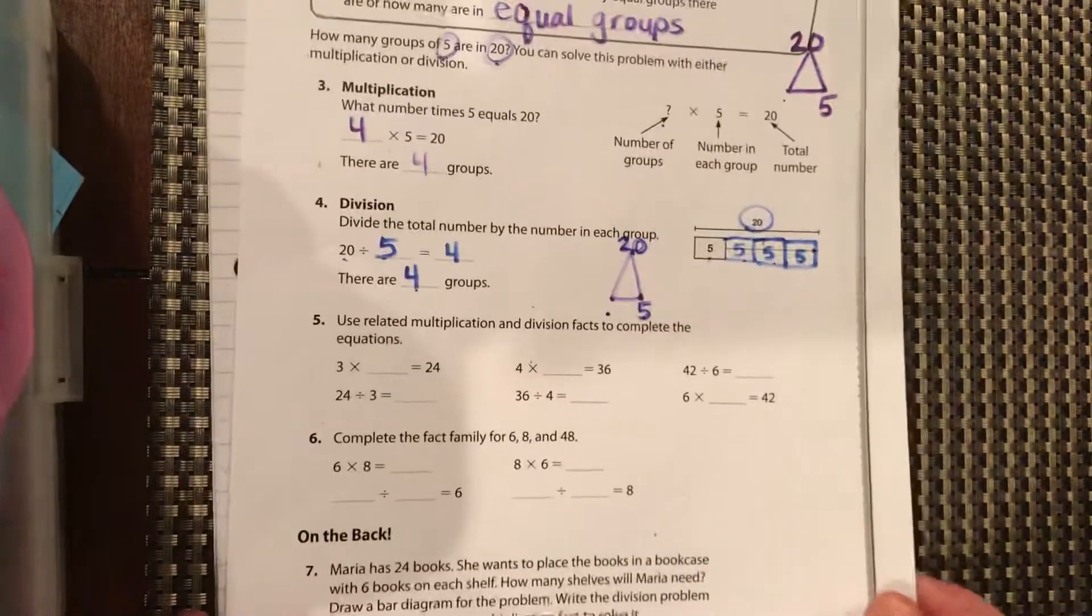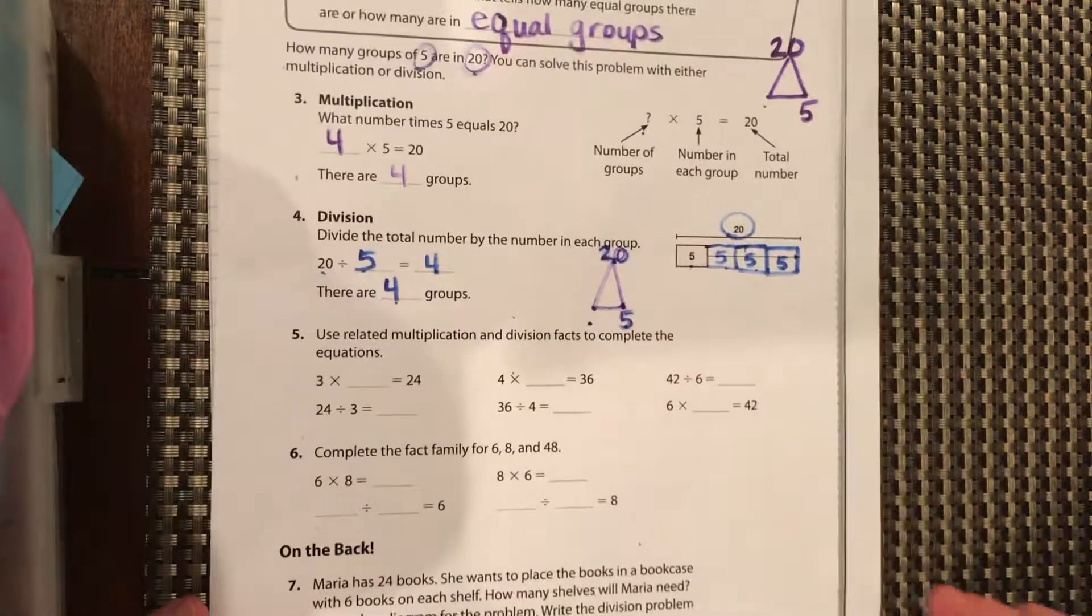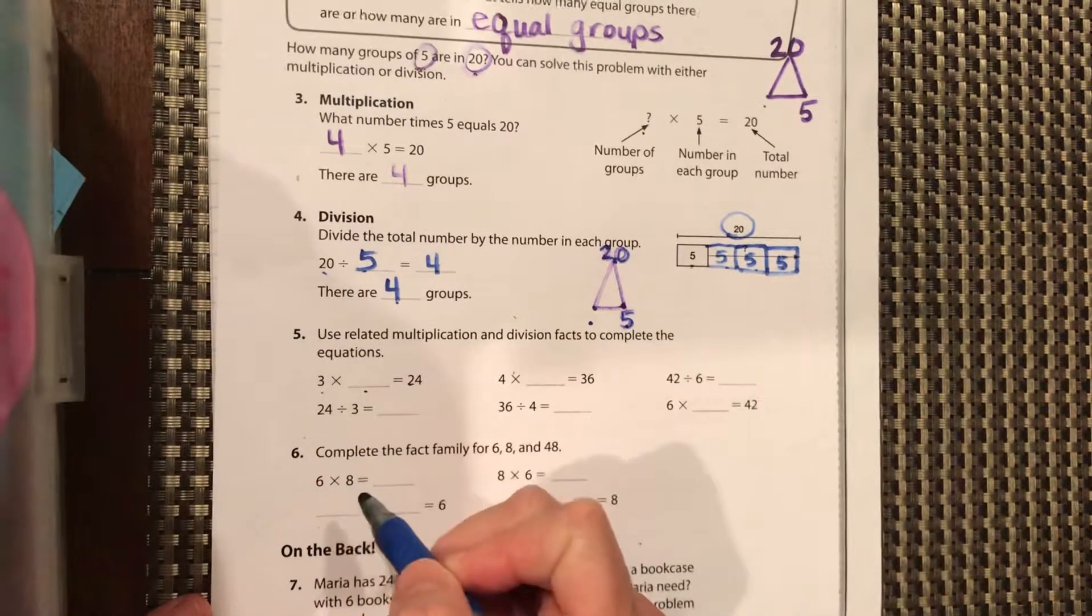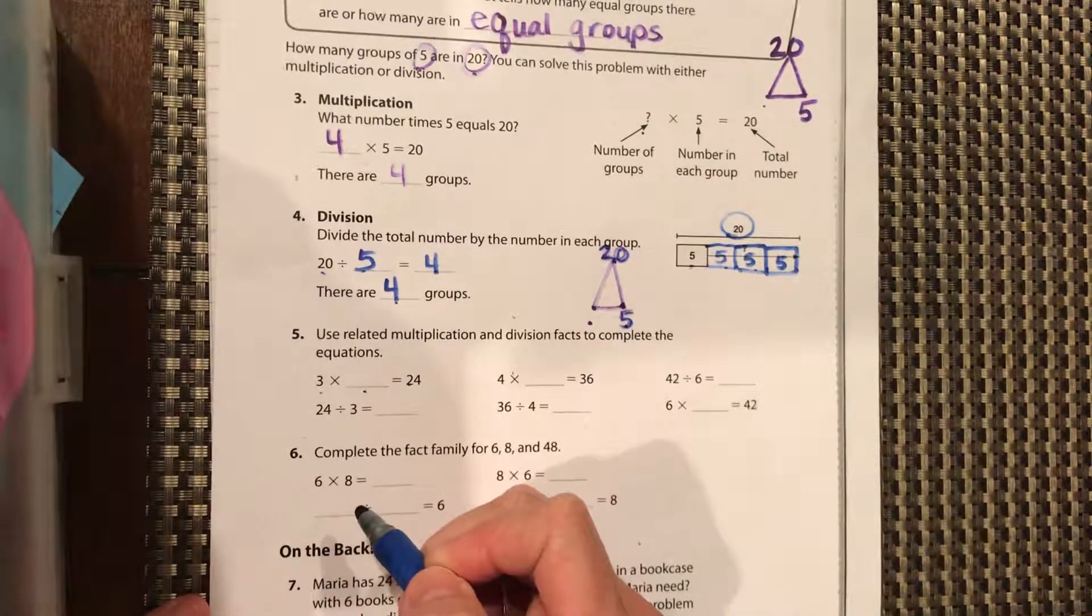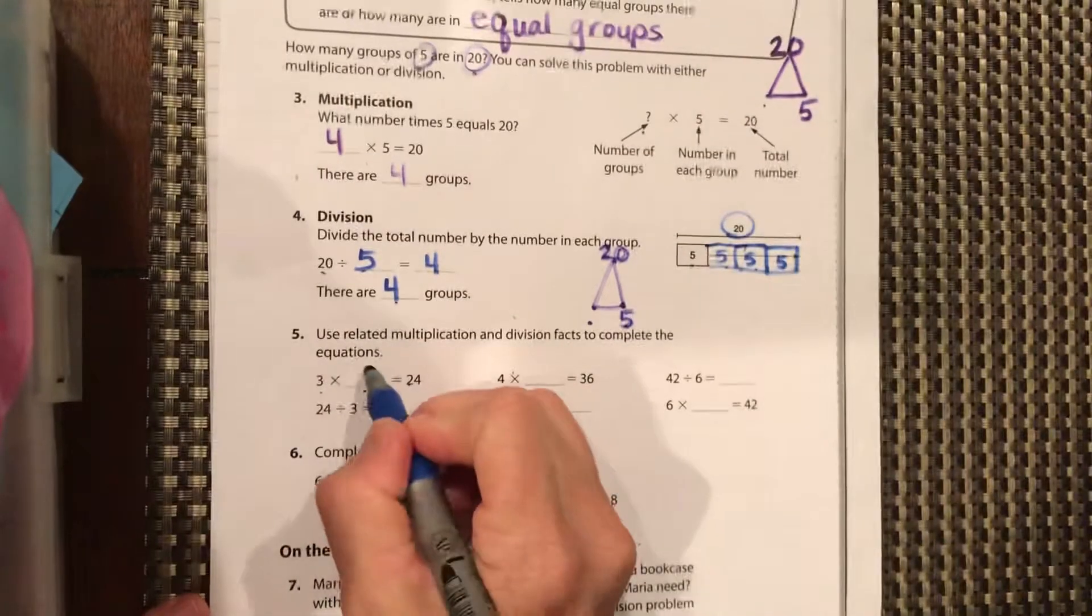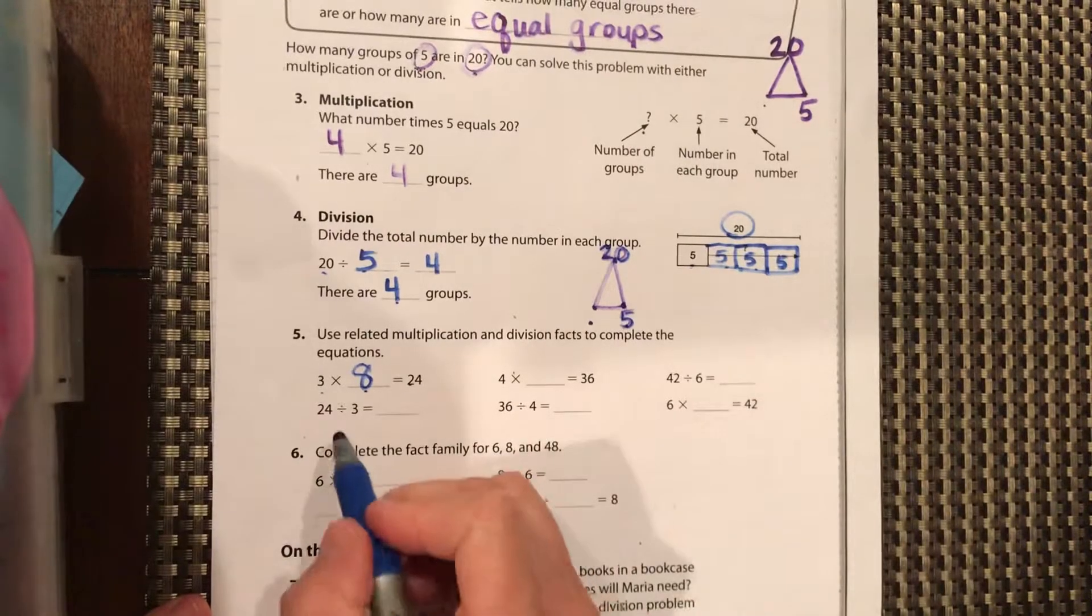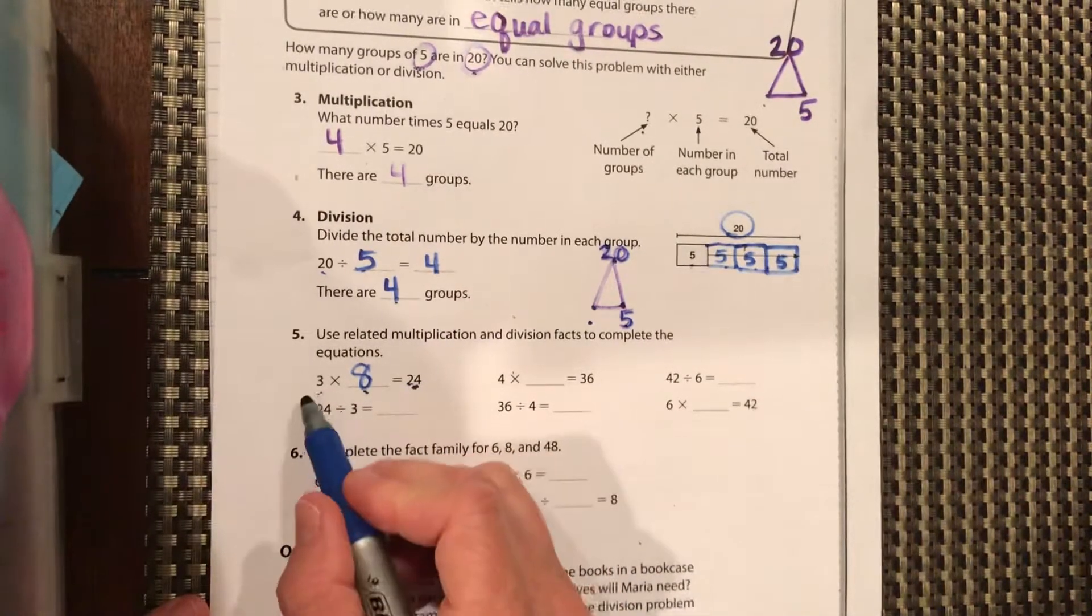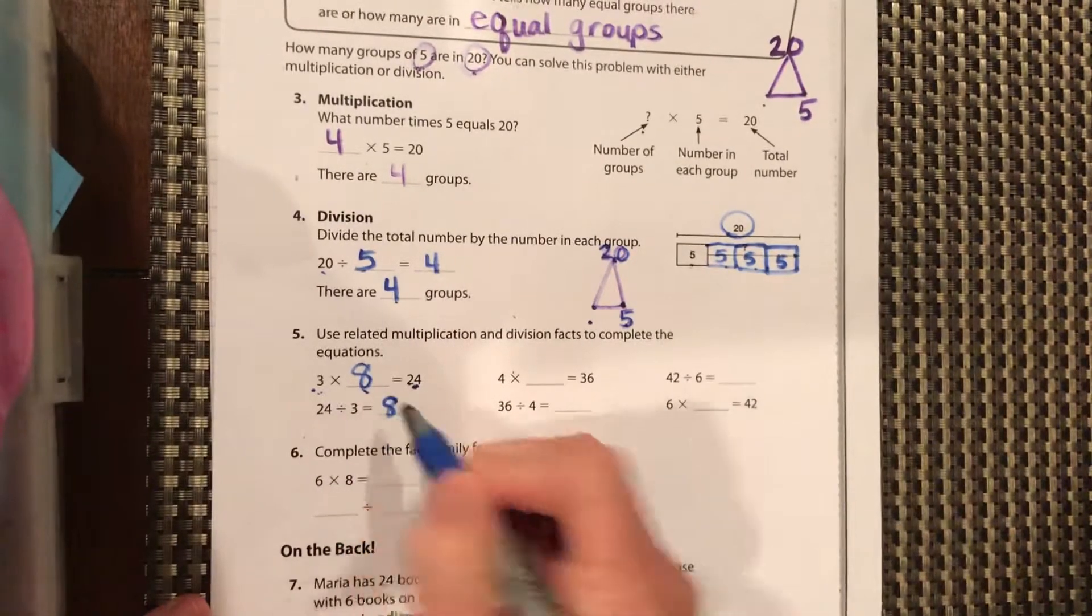So down at the bottom, use related multiplication and division facts to complete the equations. So three times what equals 24? You can pause it if you need to figure that out. It's eight. So therefore using three times eight equals 24, we should be able to do 24 divided by three equals eight.